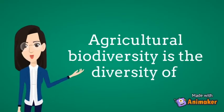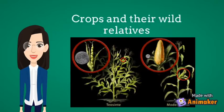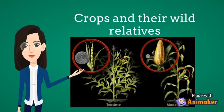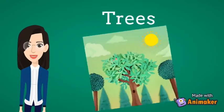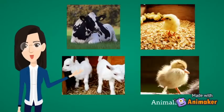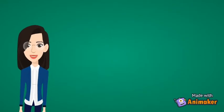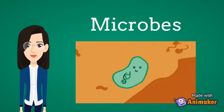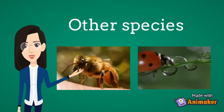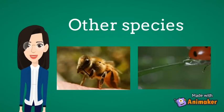Agricultural biodiversity is the diversity of crops and their wild relatives, trees, animals, microbes and other species that contribute to agricultural production.